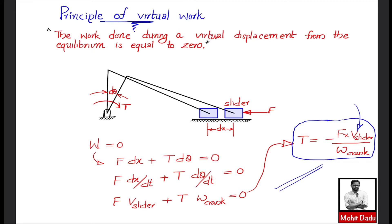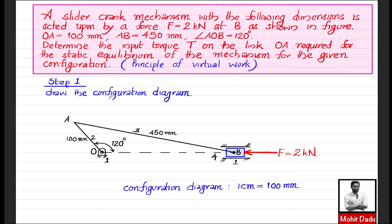Now we will apply this principle to solve a problem in static force analysis of a slider-crank mechanism — the same problem previously solved using the graphical method with free body diagrams. The first step is to construct the configuration diagram. The crank OA has a length of 100 mm at 120 degrees. Using a scale of 1 cm = 100 mm, we draw OA at 120 degrees.